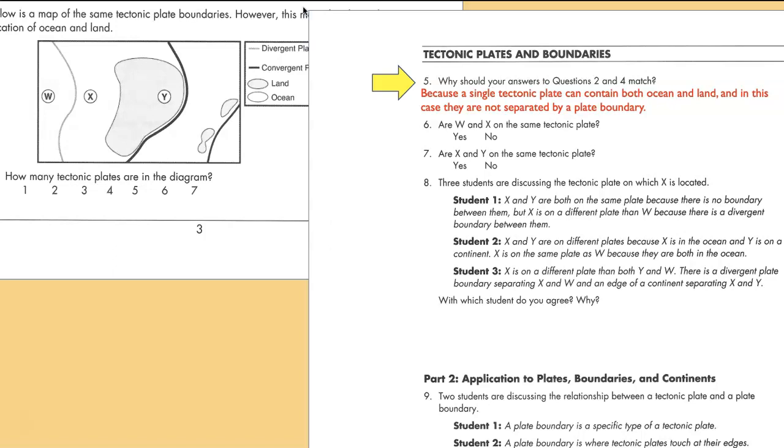Are W and X on the same plate? Well I've reproduced the figure over here and W and X are separated by a divergent plate boundary, so no they're not on the same tectonic plate. Are X and Y on the same plate? Well yes they are. Even though one's on a continent and one's in the ocean, there's no tectonic boundary between them. Three students discuss the tectonic plate on which X is located, and student one is correct. They're both on the same plate because there's no boundary between them.